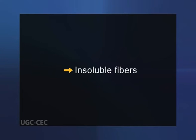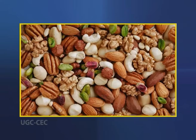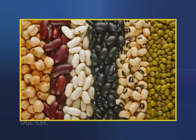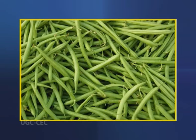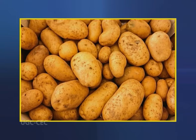Insoluble fiber promotes the movement of material through your digestive system and increases stool bulk, so it can be a benefit to those who struggle with constipation or irregular stools. Whole wheat flour, wheat bran, nuts, beans and vegetables such as cauliflower, green beans and potatoes are a good source of insoluble fiber.